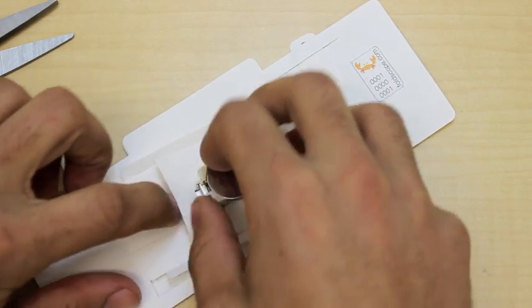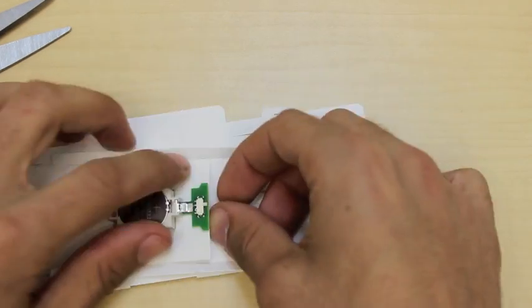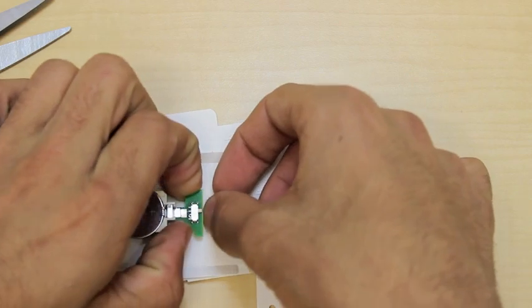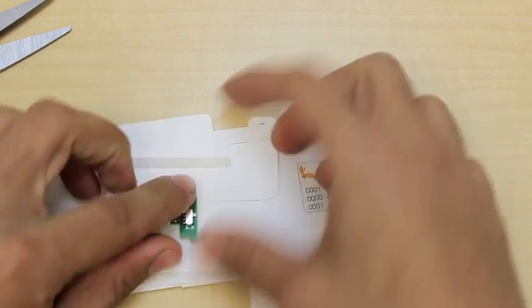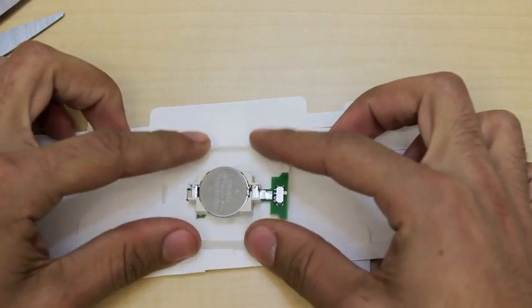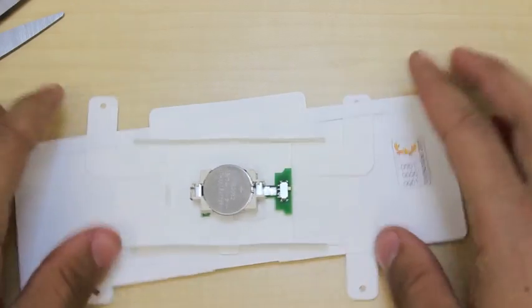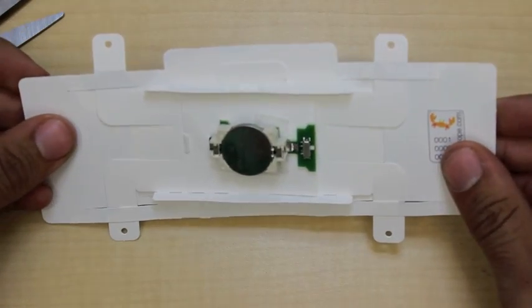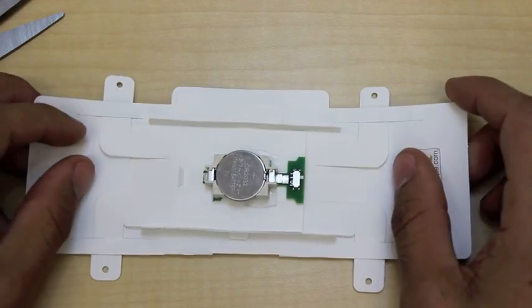Put these through the tabs and slip the light module under these two tabs and then tuck these in. And there we go. Now, we have a light module installed with the condenser lens.